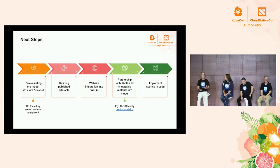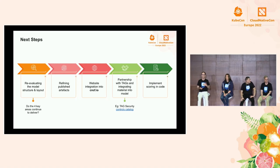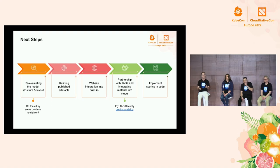We have a few next steps outlined. We want to look at the model — is it still relevant, do we like the structure, is the layout adequate, and will it age? Everything we've done within the working group is within the Cartographos repository in the CNCF organization on GitHub. We have a series of reference documents there that you're welcome to read, and we encourage pull requests and issues. We'll also be looking to integrate the model into the CNCF website, cncf.io, alongside the landscape and trail map.